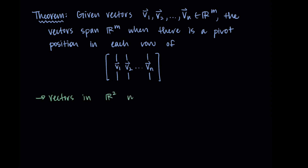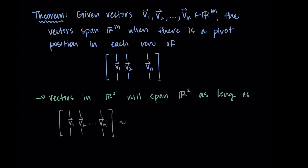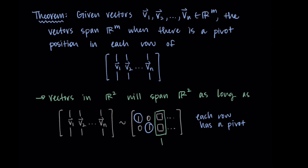In the past we've talked about pivot positions in each column, but now we're talking about having a pivot position in each row. This theorem tells us that vectors in R2 will span R2 as long as when we take our vectors v1 through vn, form a matrix, and row reduce, each row has a pivot — we get a 1 in each row. Then starting from the third column onward, we may have free variables and those vectors are redundant. Because both rows each had a pivot, we can reach any point in R2.